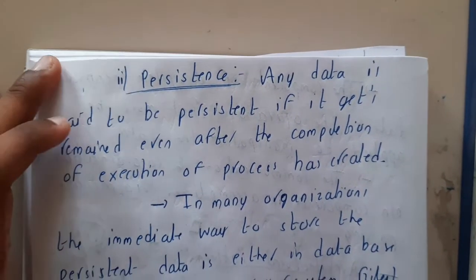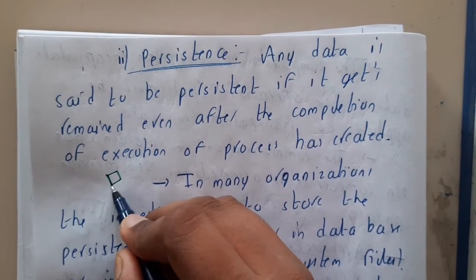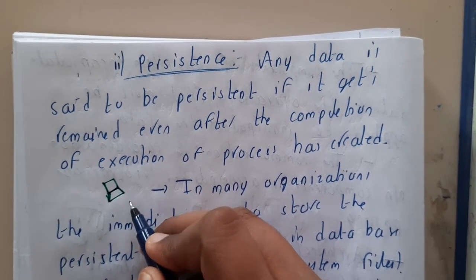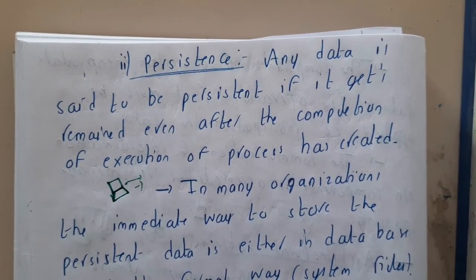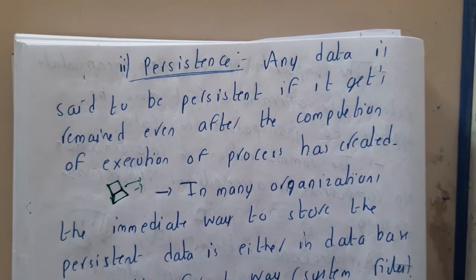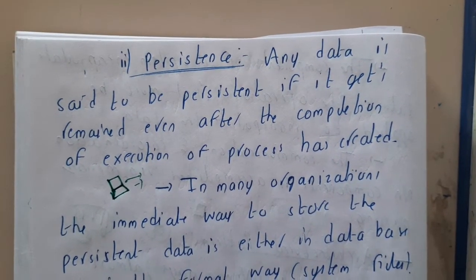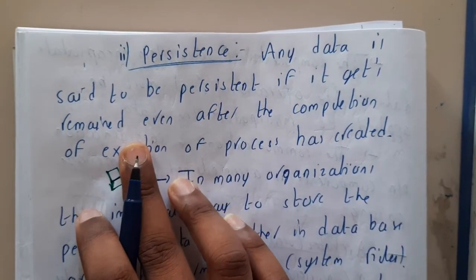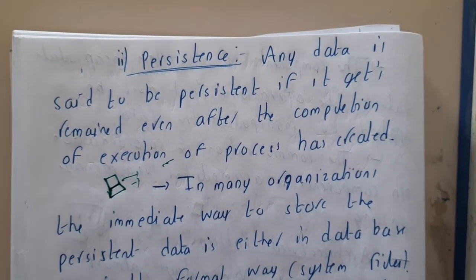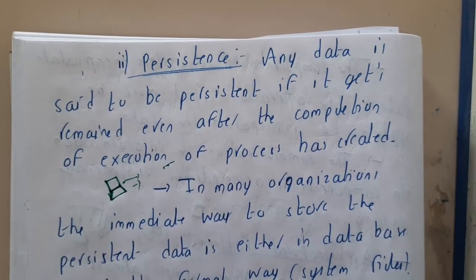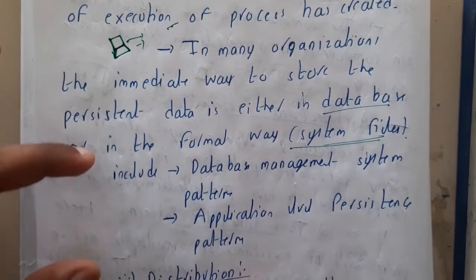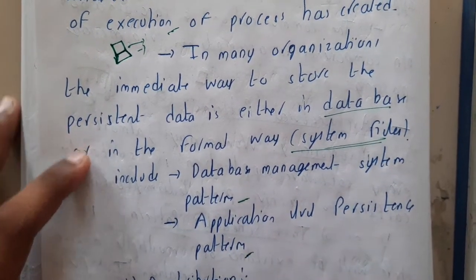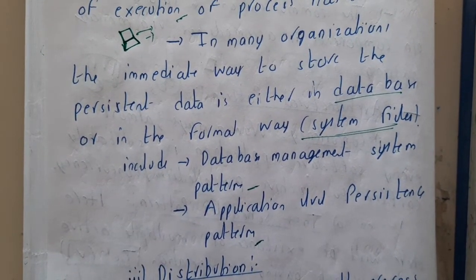The second important pattern is persistence. Basically, whenever you are doing some process, applications will store some data — at least some samples or an outline of your data — somewhere on your system or in server databases. These files will be database files or system files, small in size and somewhat protected compared to normal files. Any data is said to be persistent if it remains even after the completion of execution. You'll sometimes observe temp files, which are also a form of saved files. Organizations typically store persistence files either in a database or in formal system files, including database management system patterns and application-level persistence patterns.